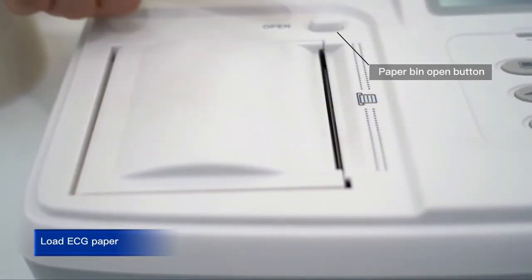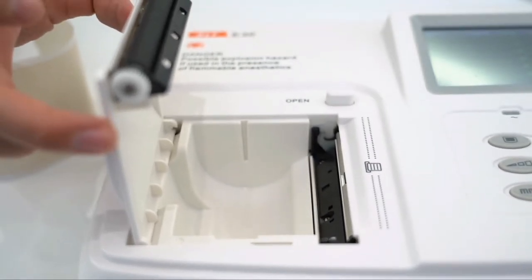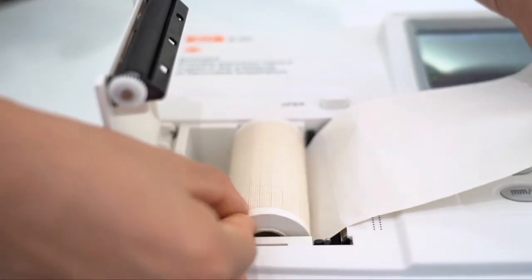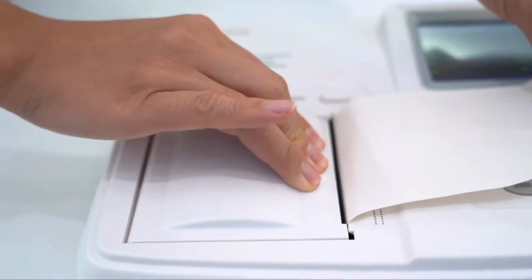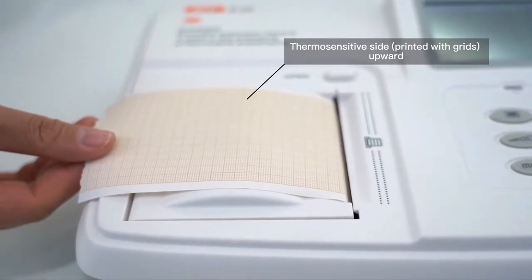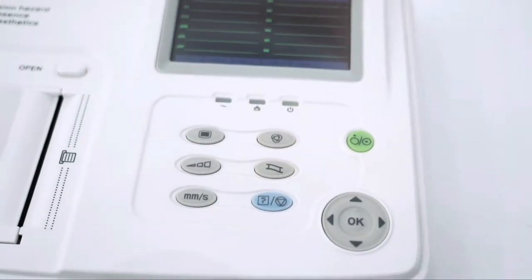To load ECG paper, press down the paper pin open button to open the paper pin. Remove the packaging of new chart paper and then place the chart paper into recorder box. Pull out chart paper from the paper outlet, keep the thermosensitive side printed with grids upward. Firmly close the recorder box and the installation is completed.